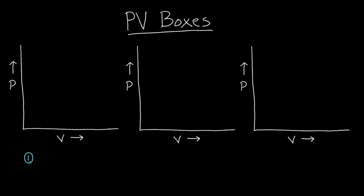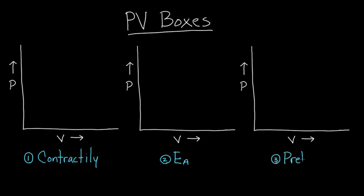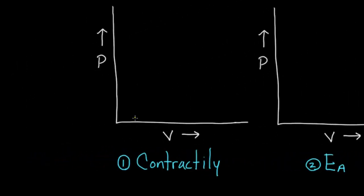The first thing we can tweak is contractility, and the second thing is arterial elastance, or sometimes we just call that EA, and the third thing we can tweak to change our PV box is preload. These are the three ways that we can actually change how the box looks, and I want to walk you through exactly what will happen if we change each one. So let's do contractility first.